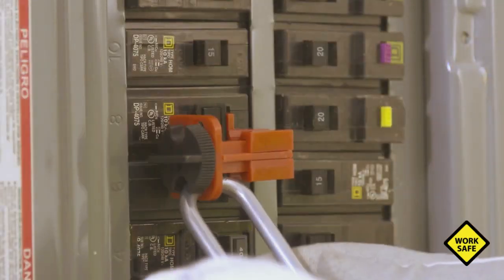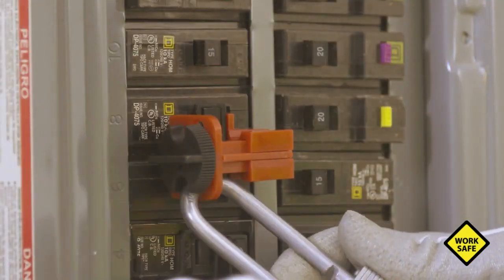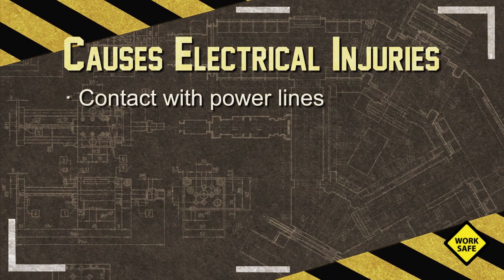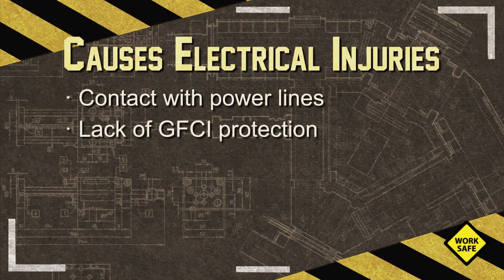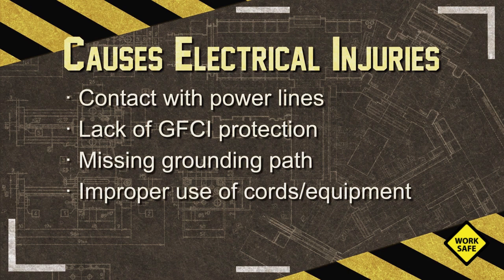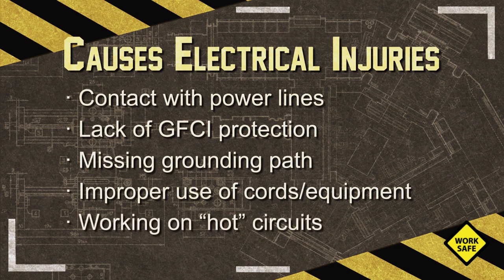The most common causes of electrical incidents and injuries come from the following: contact with overhead or buried power lines and other live parts, lack of or improper ground fault protection, grounding paths missing or discontinuous, improper use of extension cords and degrading equipment, and working on energized or hot electrical circuits.